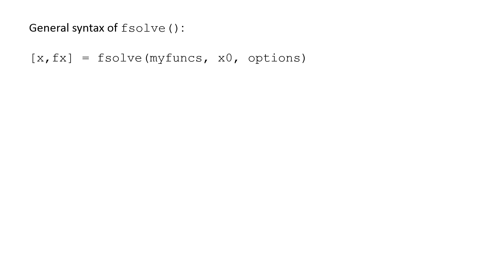The output of the function is assigned to x and fx. The first argument, myfuncs, is a vector containing the functions or a reference to the functions that we want to solve.